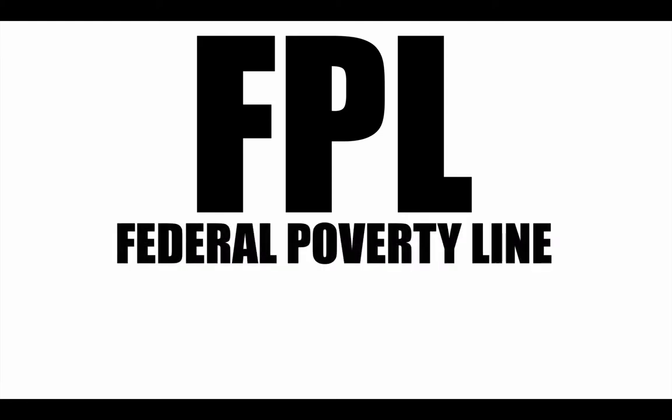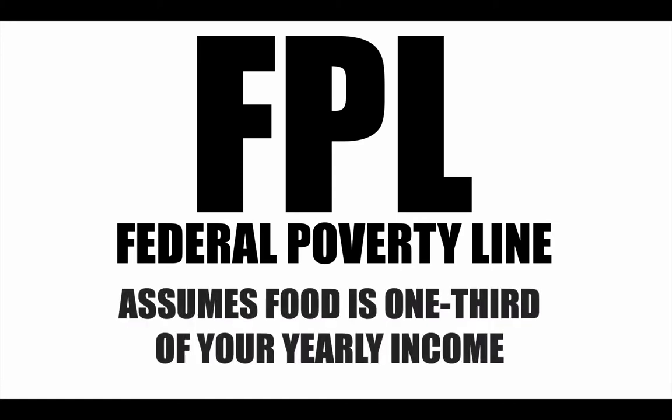The federal poverty line is based on food — that's how we calculate it right now. We assume that food is one-third of all your income for the year. So take whatever you spend on food and triple that. That's your income. That's the federal poverty line.